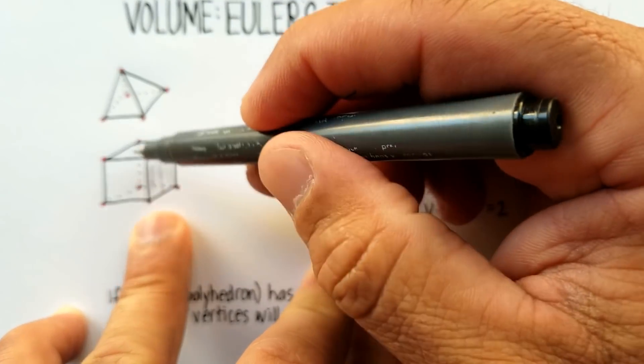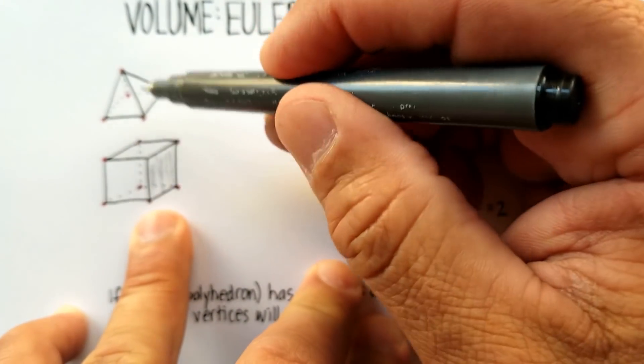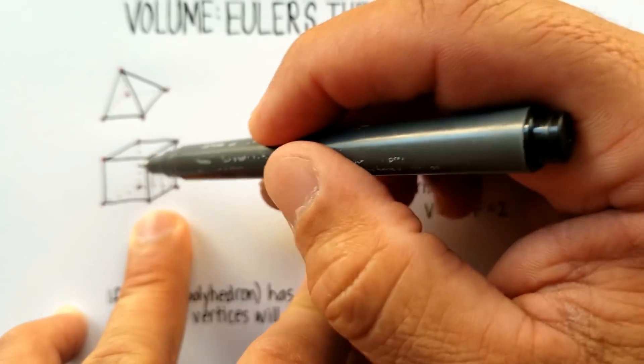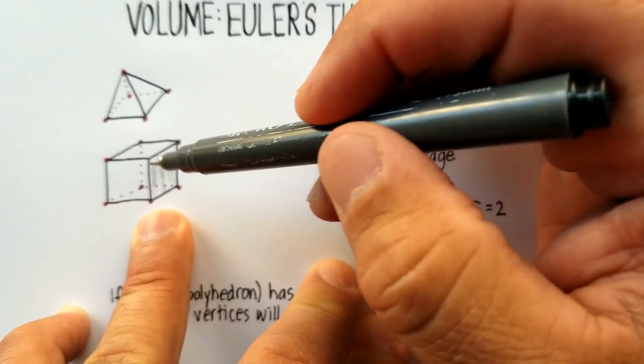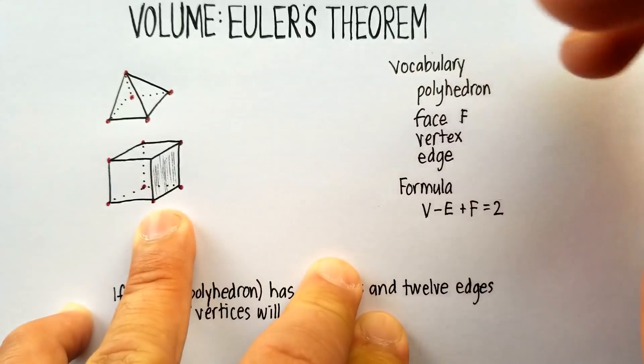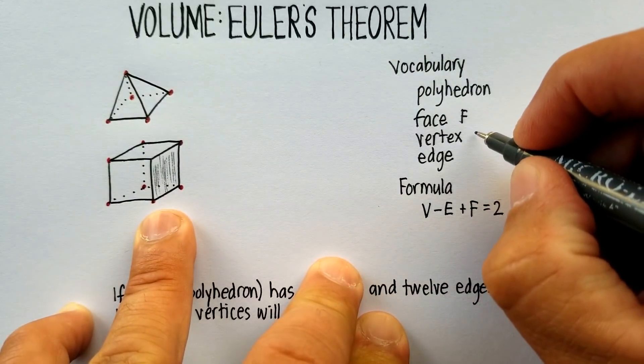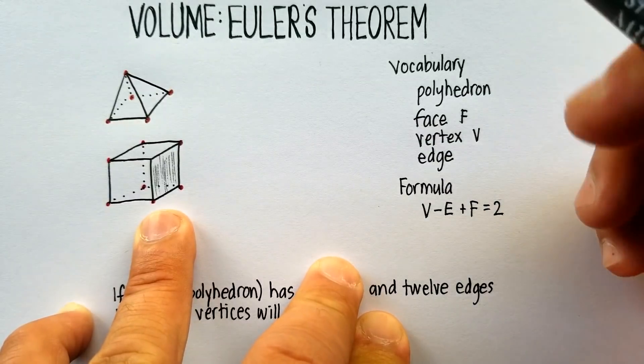Now, the vertex would be these little round red dots. It's where the two lines or three lines of any solid meet. And that's called a vertex. Vertices is plural.